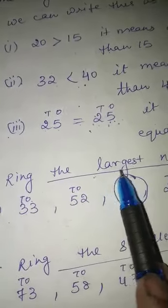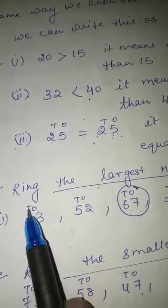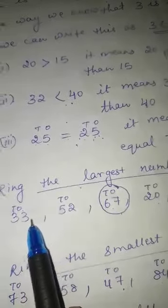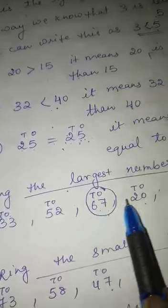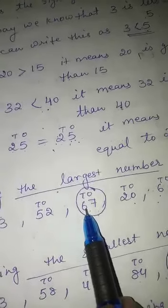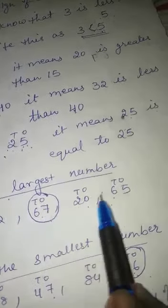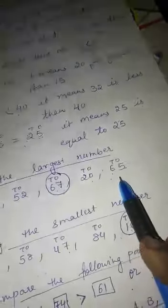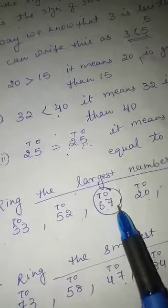Now we are coming to Part B: ring the largest number. The numbers given are 33, 52, 67, 20, 65. I have written ones and tens above all the numbers. You will look at the tens place: 3, 5, 7, 6, 2. There are two numbers with 6 in the tens place — 67 and 65. Now look at the ones place: 7 and 5. Which is greater, 6 or 7? 7. So 67 is the largest number. This you will also do in your maths book.